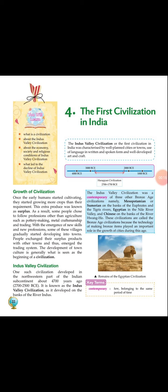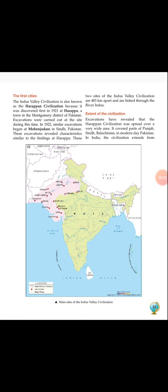Today we will discuss about Chapter 4 of history, that is the first civilization in India. In the previous video, we discussed how civilizations grew in ancient times, and about the Indus Valley Civilization, located on the banks of the river Indus. The first city discovered in this civilization was Harappa, and because of that it is also known as the Harappan Civilization, discovered in 1921. The second city discovered was Mohenjodaro.